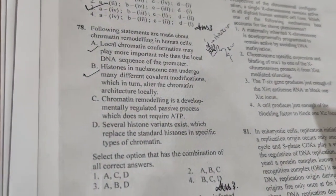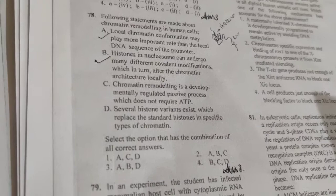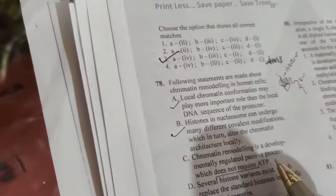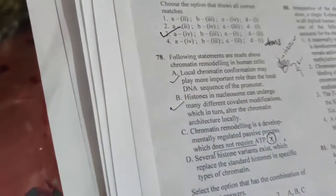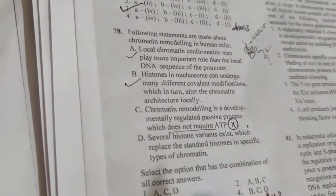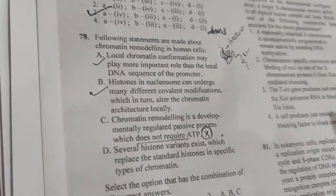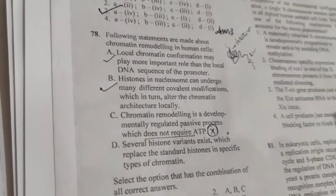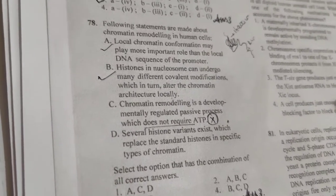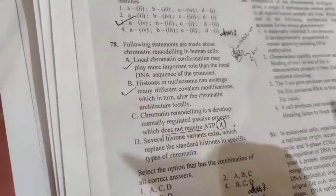C: Chromatin remodeling is a developmentally regulated passive process which does not require ATP. It does not require—this option is wrong. Because we know that nucleosome sliding, transfer, chromatin remodeling, in which there are chromatin proteins, SWITCH proteins. So this statement is wrong.